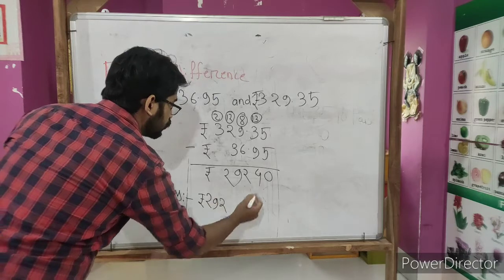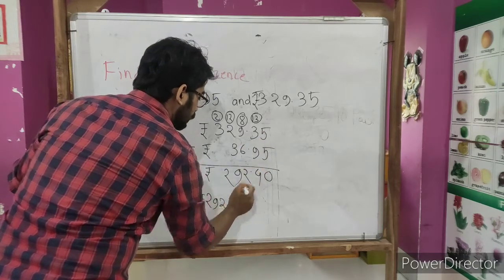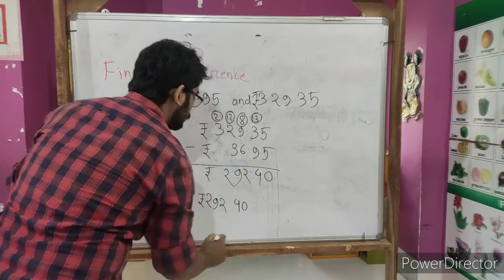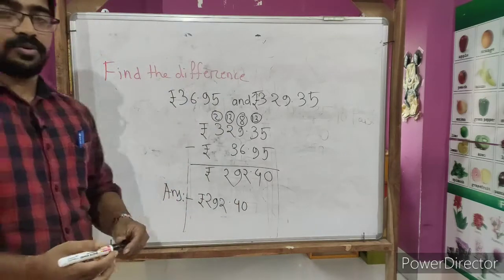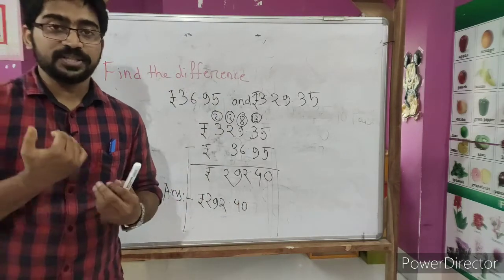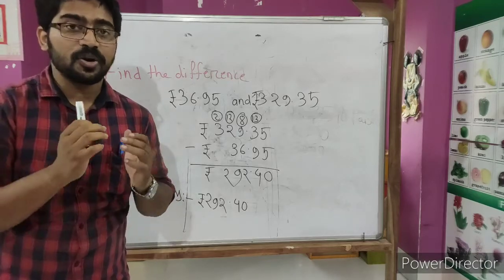So answer will be rupees 292.40. So that's all for today, and now we need to practice lots of additions and subtractions from the chapter called Money.